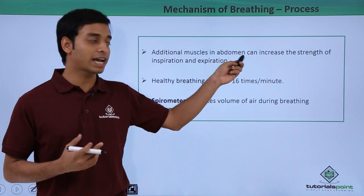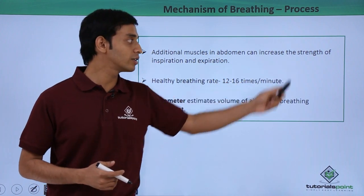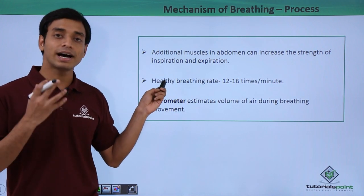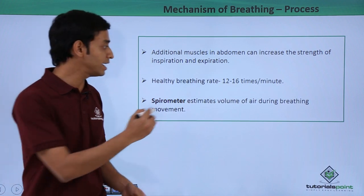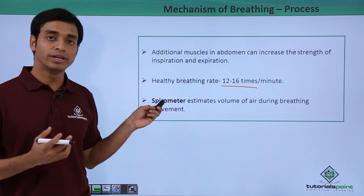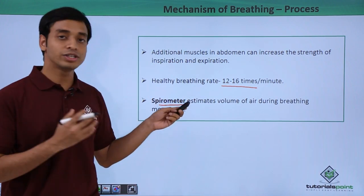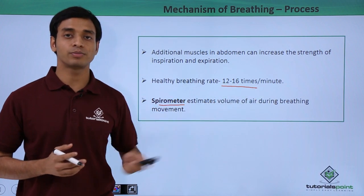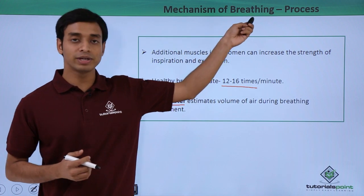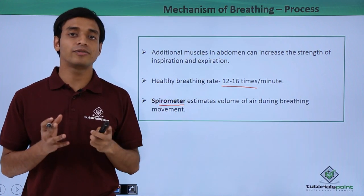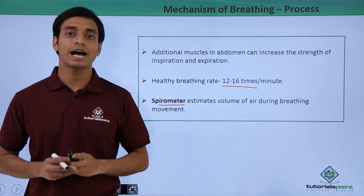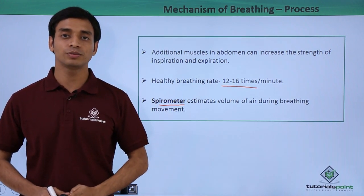If additional muscles of the abdominal cavity are included, it can result in an increase in the strength of inspiration and expiration. A normal healthy human being can breathe at a rate of about 12 to 16 times per minute. There is an instrument known as a spirometer, which can estimate the volume of air during the process of breathing. In this video we have discussed the mechanism of breathing and the various changes happening during inspiration and expiration.